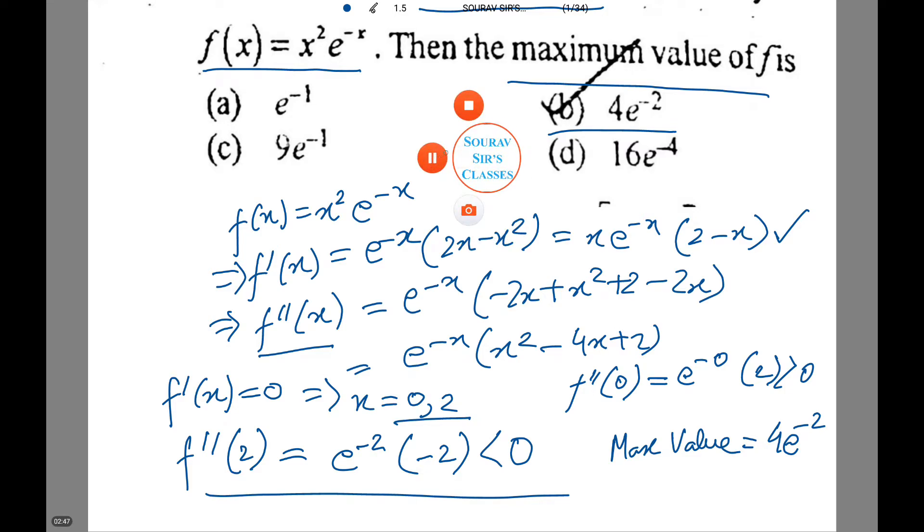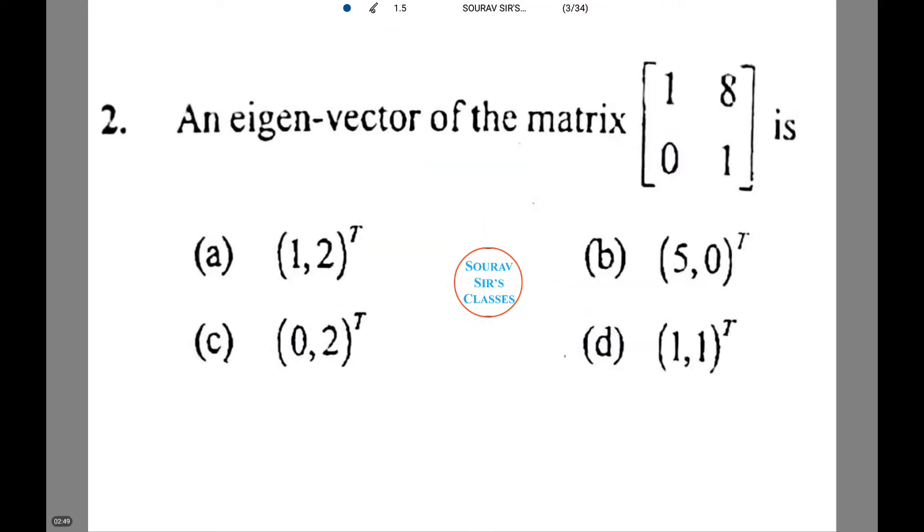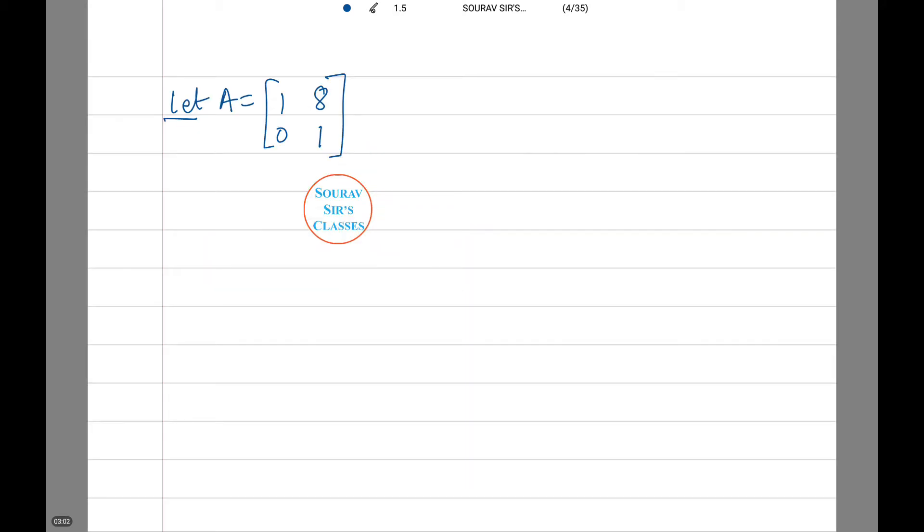An eigenvector of the matrix [1, 8; 0, 1] is given. This can be written in the following four manners. Let's see how to figure it out. Let A equal the eigenvector matrix. Thus, the eigenvalues of A are 1, 1.